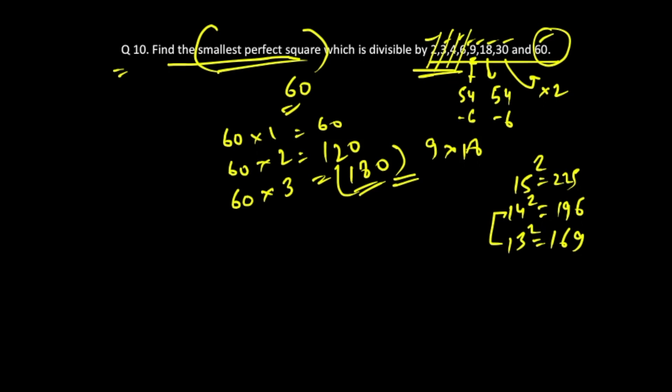Since we have to consider a number which is divisible by these numbers as well as a perfect square, we'll consider the multiples of 180. 180 times 1 is 180, it is not a perfect square. 180 times 2 is 360, but is 360 a perfect square? No.